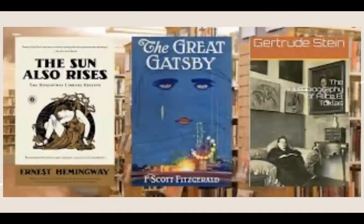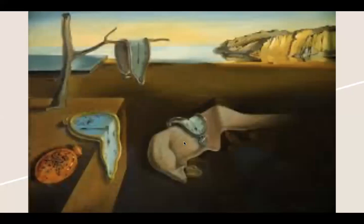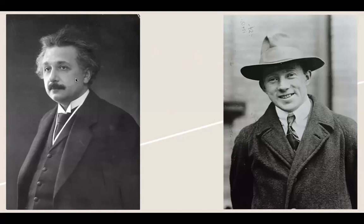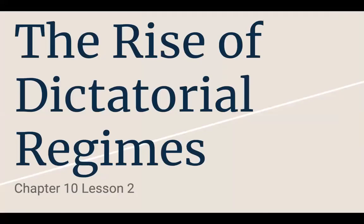Here are some famous books from the era: Gertrude Stein's work, The Great Gatsby, The Sun Also Rises. This is a Salvador Dali painting. That's Heisenberg — and also a young Albert Einstein. That's going to conclude this lecture. Your homework is page 370, questions 2 through 4. Hopefully you enjoyed that — hit the like button, leave a comment, subscribe, and I'll see you in the next one.